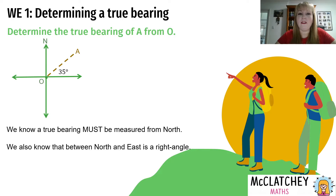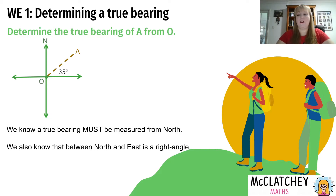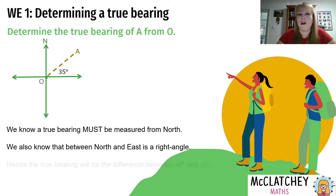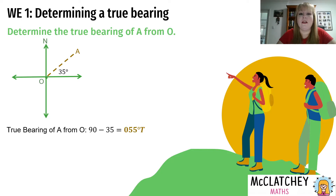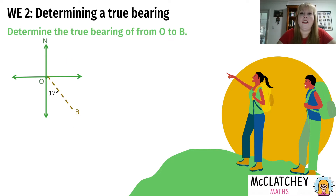We're trying to find the angle between the north line and point A. We've been given a figure of 35 degrees, but that's outside the bearing range we need. Between north and east is a right angle, so our actual true bearing is the difference: 90 degrees minus 35 degrees, which gives us 55 degrees true.